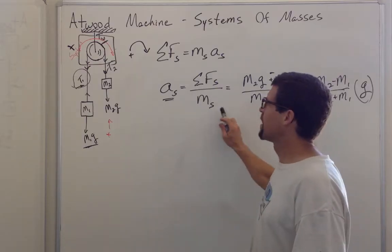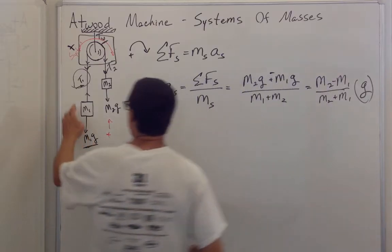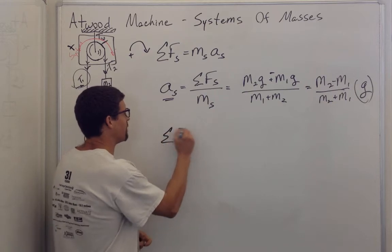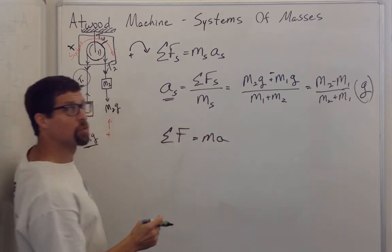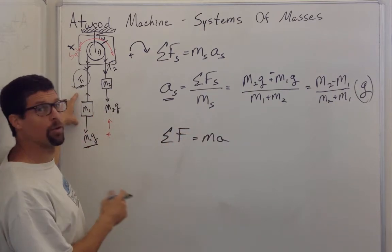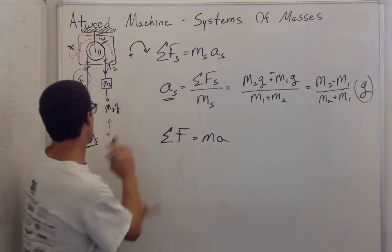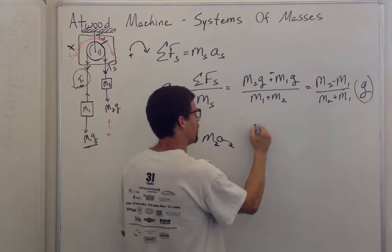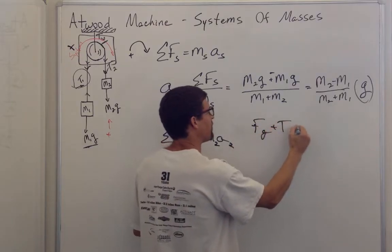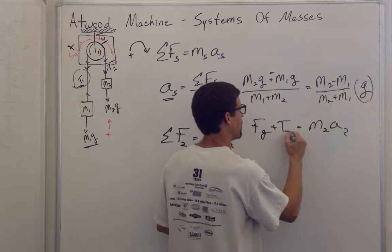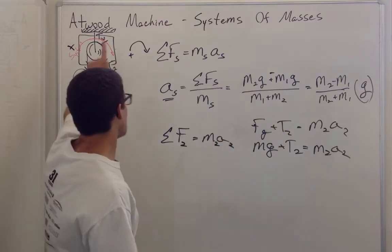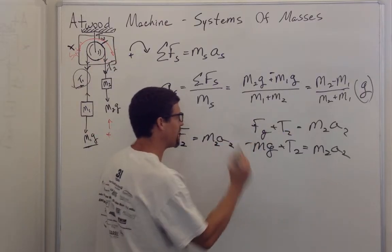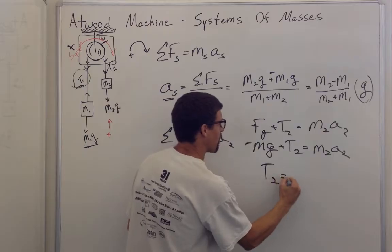And once you find acceleration again, you can find the tension in the string by recognizing that the tension is just one of the two forces acting on either of these masses. So pick a mass. I'll say mass 2. And say on mass 2, we've got the force of gravity plus the tension is equal to the mass 2 times acceleration 2. I define this as a positive direction. So this is negative and back where we were before.